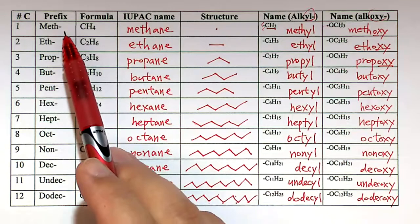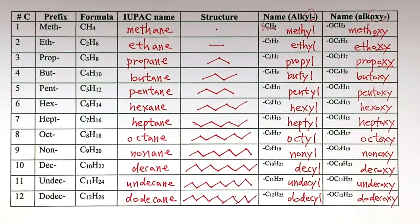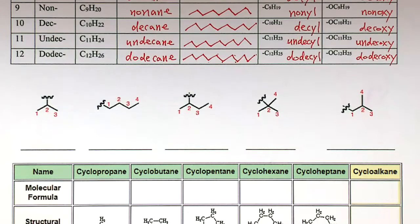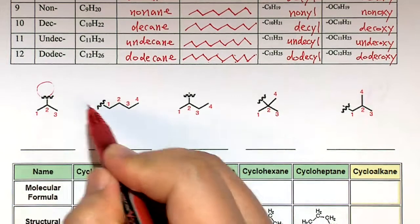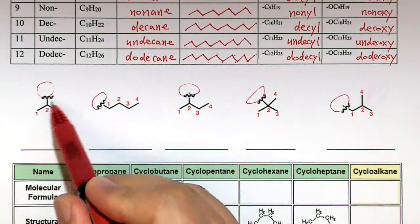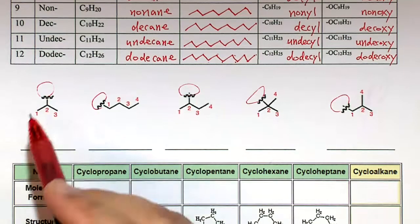These are the very basic names for hydrocarbons — alkanes. So methane through dodecane. When it's a branch, we put -yl instead of -ane. If there's oxygen in between, we use -oxy, so it's methoxy through dodecoxy. You should memorize 1 to 12. When you see an organic compound with 5 carbons, the name will probably end with pentane.